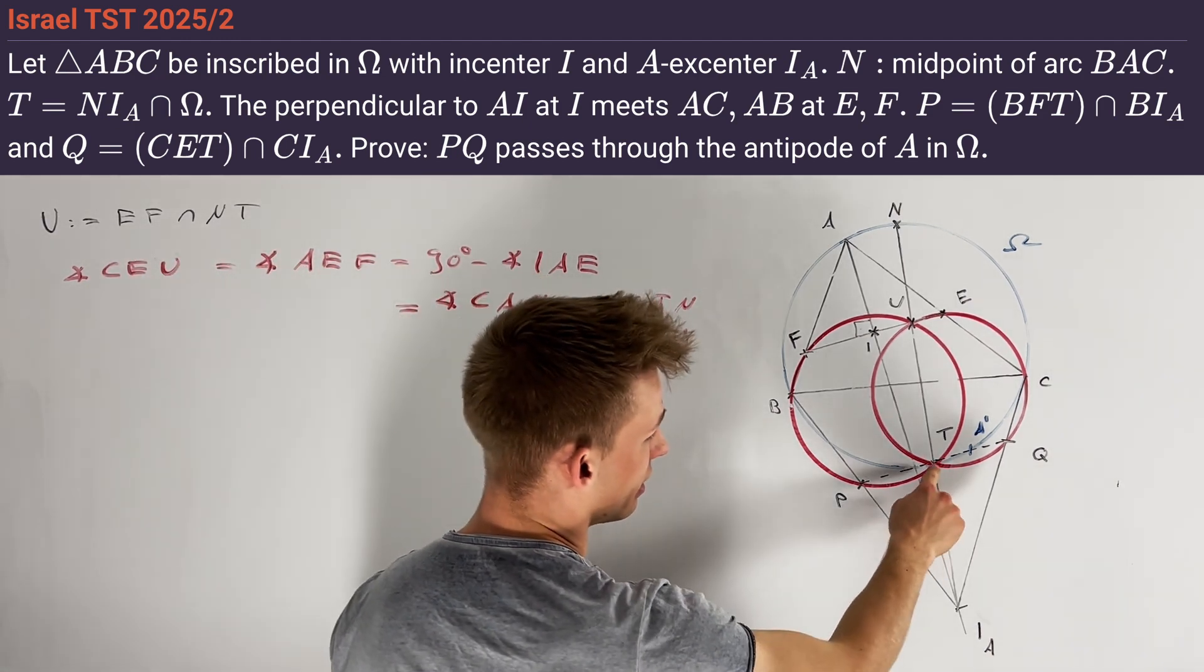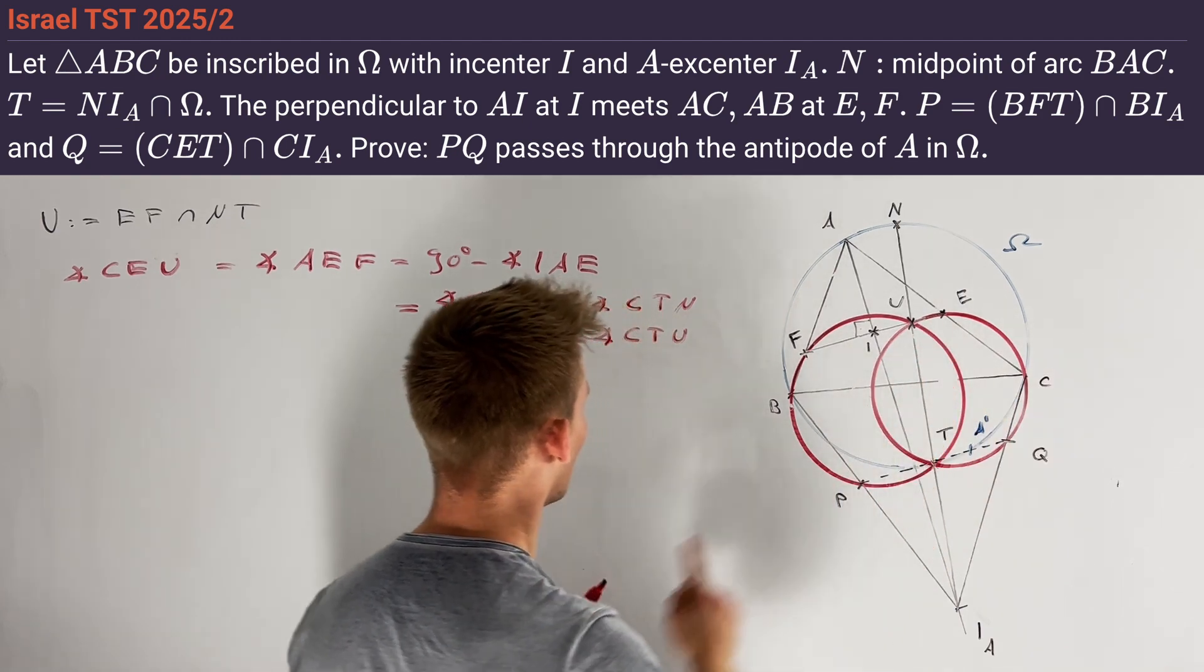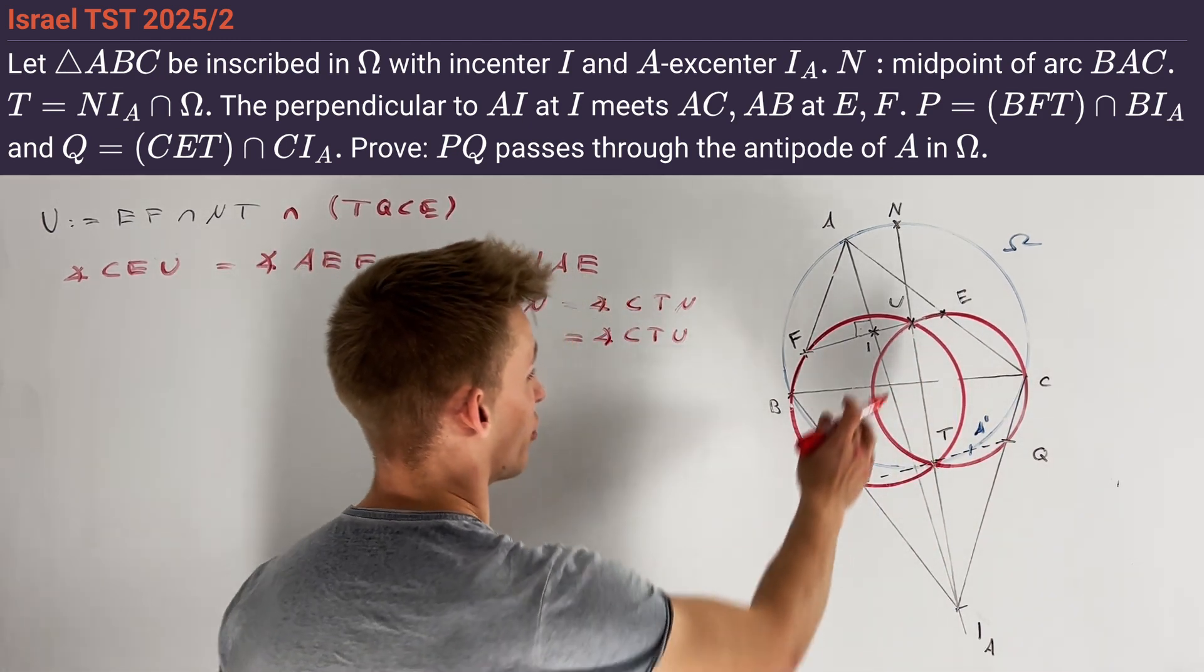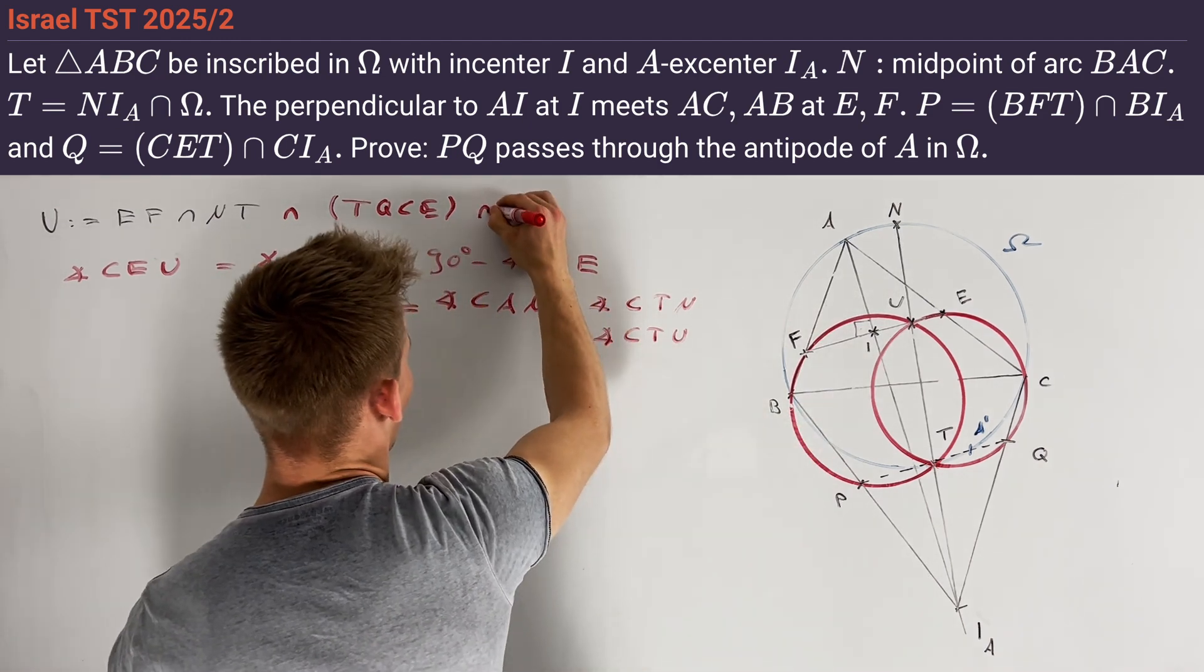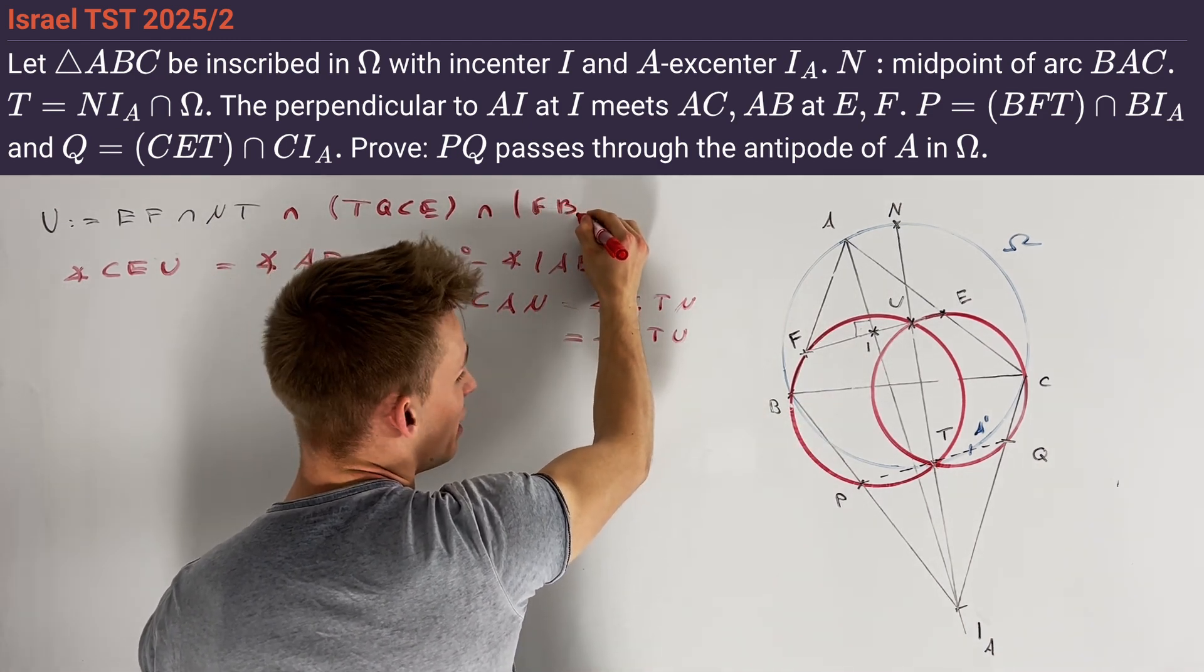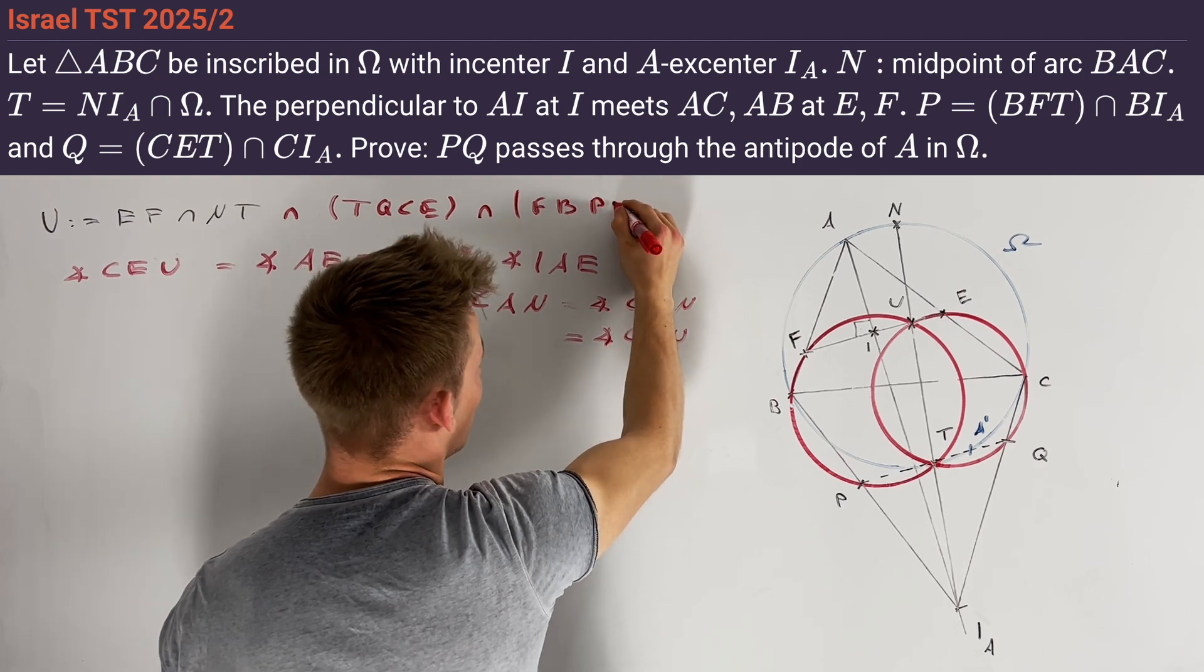And therefore, we indeed see that the points T, C, E, and U lie on one circle. In the exact same way, we can also prove that the point U lies on the circumcircle of F, B, P, T.